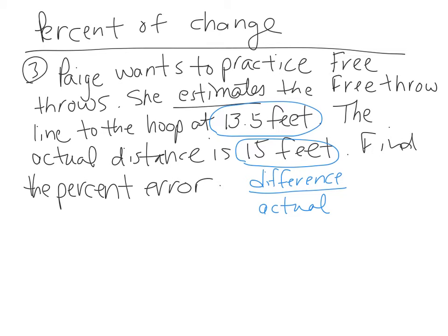You're going to subtract the difference, so 15 minus 13.5 feet, and that will give you 1.5 feet, which is how far she was off, over the actual amount, over 15.